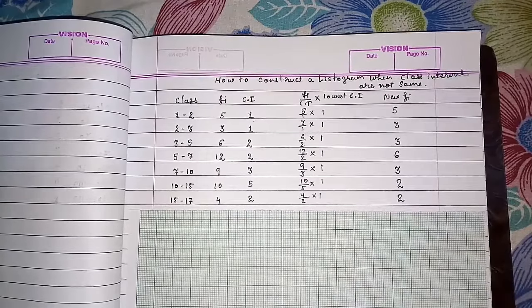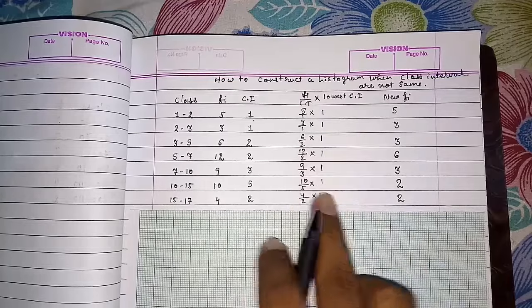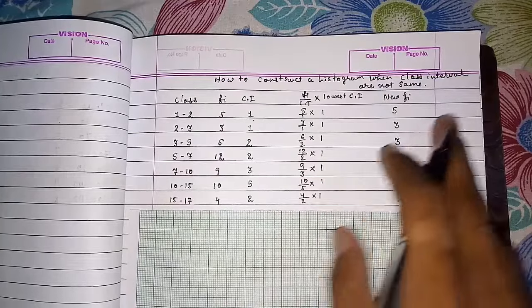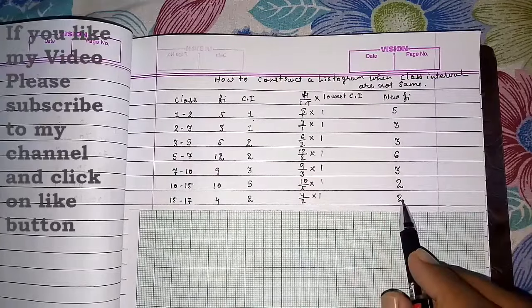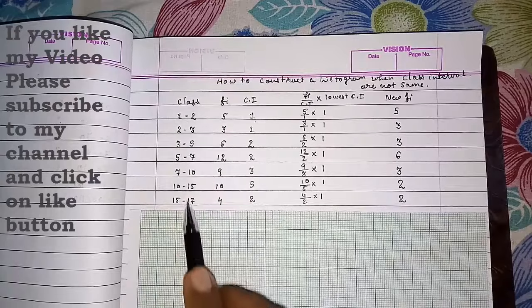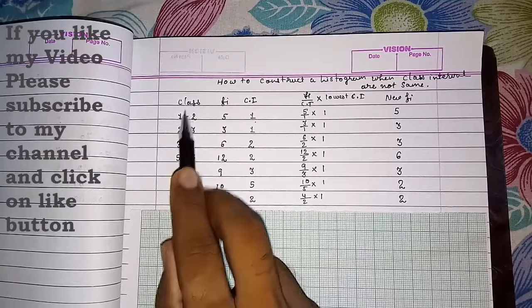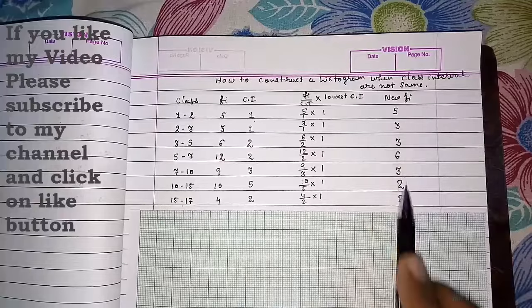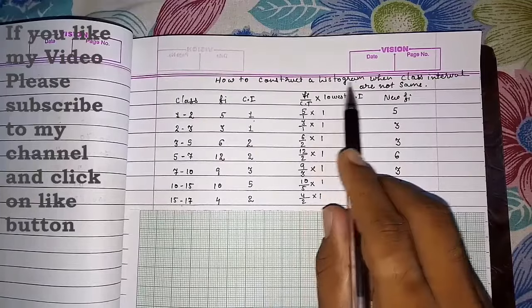If class interval is more, then we have to multiply with it. Now we are getting a new frequency, and this is our old class. So we have to use this class and this frequency for constructing a histogram.